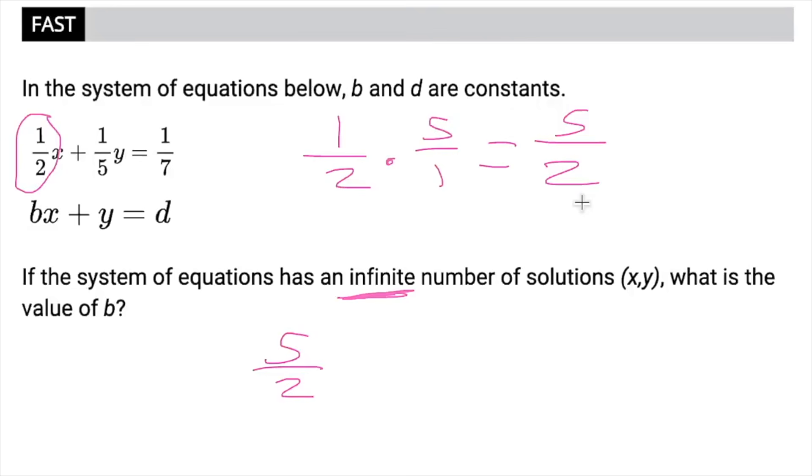The takeaway is, if you see infinite number of solutions, or no solutions for that matter, remember that the slope is the same. And remember that the ratio between the coefficients of x and y are also going to be the same. So if y's coefficient goes through a change, in this case being multiplied by 5, x's coefficient will go through that same exact change.